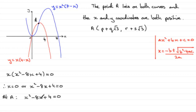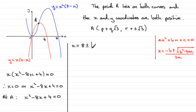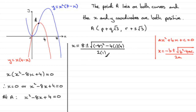Using this to solve for x: x equals minus b — b is minus 8, so that's plus 8 — then plus or minus the square root of b squared, which is minus 8 squared, minus 4 times a times c. Now a is 1 and c is 4, all divided by 2 times 1. Simplifying: x equals 8 plus or minus the square root of 64 minus 16, which is the square root of 48, all divided by 2.